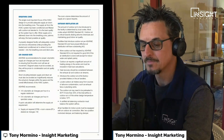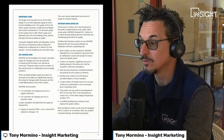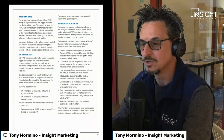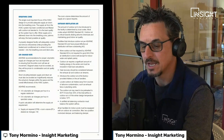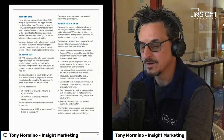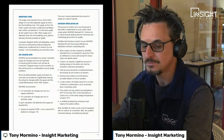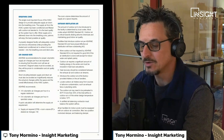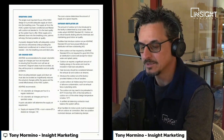On air change rate: ASHRAE recommends proper volumetric supply air changes per hour to ensure the entire room sees air movement. Stagnant areas must be avoided as they will be prone to condensation and air quality problems. Short cycling between supply and return air must also be avoided as it significantly reduces the actual air changes within the space. ASHRAE recommends 4–6 volumetric air changes per hour in a regular natatorium and 6–8 volumetric air changes per hour in spectator areas.